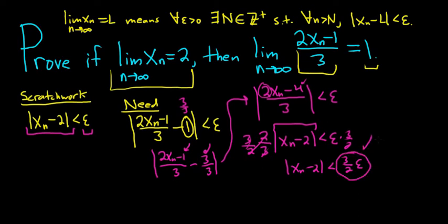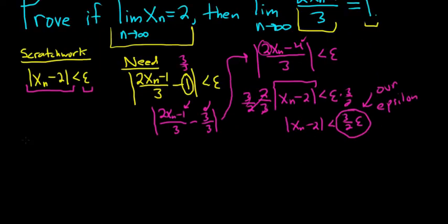All right, this is going to be our epsilon in our proof. This is going to be our epsilon in the proof. So now let's go ahead and write the proof and you'll see exactly what I mean. It's a really cool problem. So let me switch colors here. Go to green. So proof.